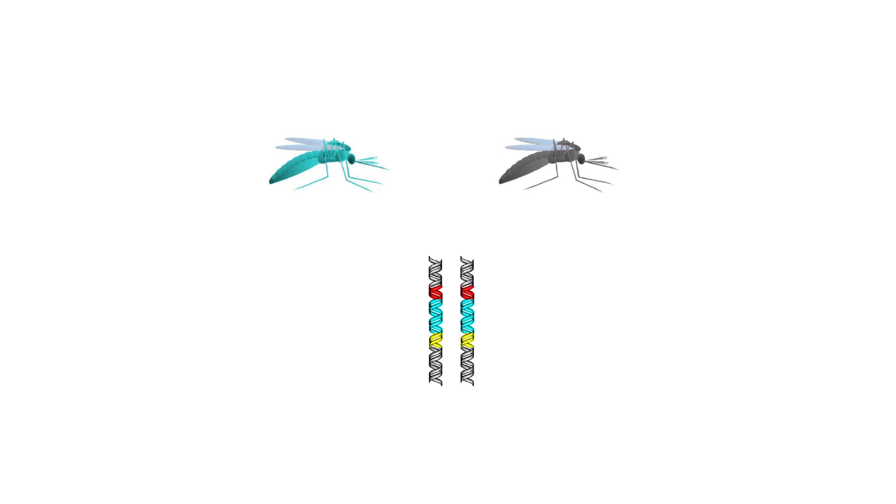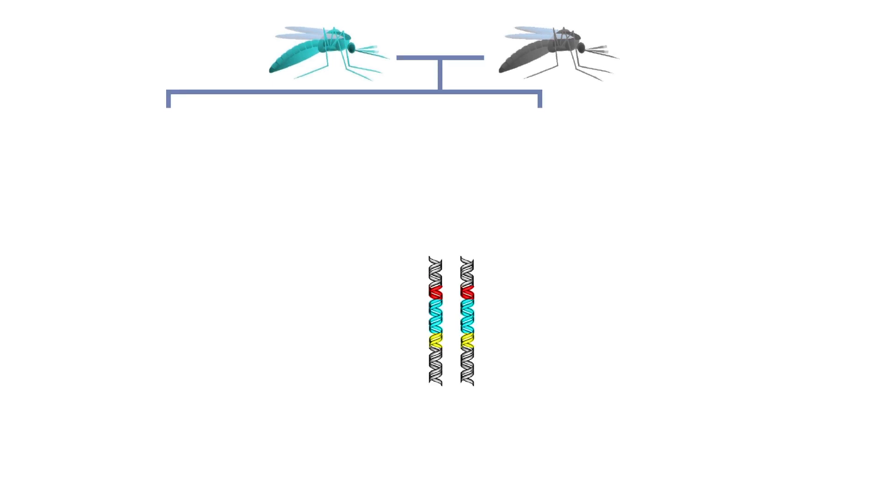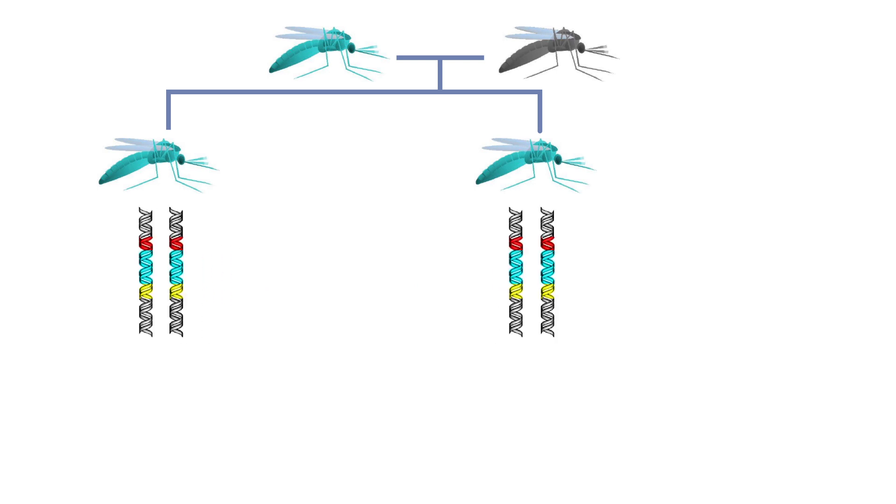Because the mosquito now has two identical copies, one on each chromosome, all of its offspring will inherit the alteration and the gene drive.